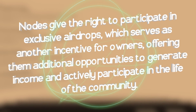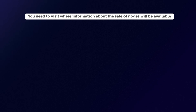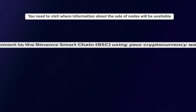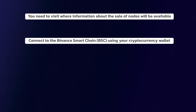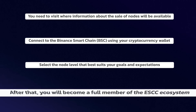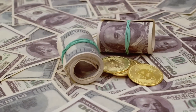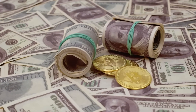To become a part of the community and purchase a node, follow these simple steps. First, visit the website where information about the sale of nodes will be available. Then connect to the Binance Smart Chain using your cryptocurrency wallet, for example MetaMask. This will allow you to interact with the platform and make purchases. Next, select the node level that best suits your goals and expectations. Enter the invitation code if you have one, and follow the on-screen instructions to complete the purchase. After that, you will become a full member of the ESCC ecosystem and will be able to enjoy all the benefits that node ownership provides.